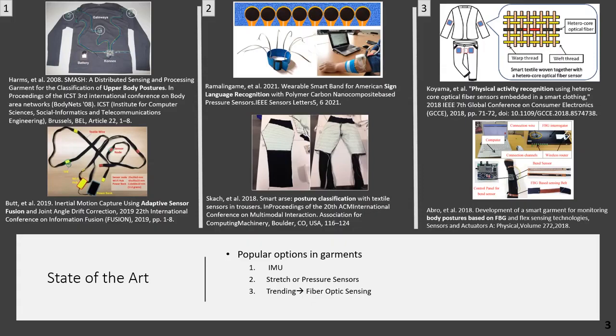The popular option to tackle BPG recognition are IMU and stretch or pressure sensors. While highly effective in many applications, most current systems share one limitation. They require sensors to be firmly fixed to the body through tight garment or dedicated accessories, such as bracelets and straps.